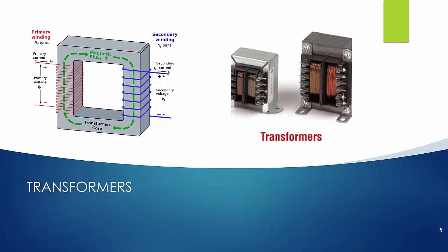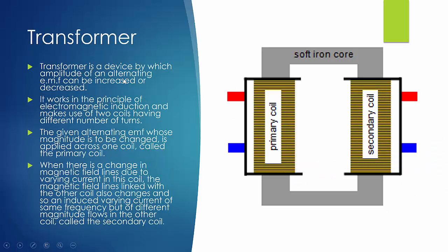Transformers is the last section of the electromagnetism chapter. As you can see in this slide there are two figures — the actual transformer and the inner part of the transformer. A transformer is a device which converts the amplitude of an alternating EMF to an increased level or a decreased level. It works on the principle of electromagnetic induction.